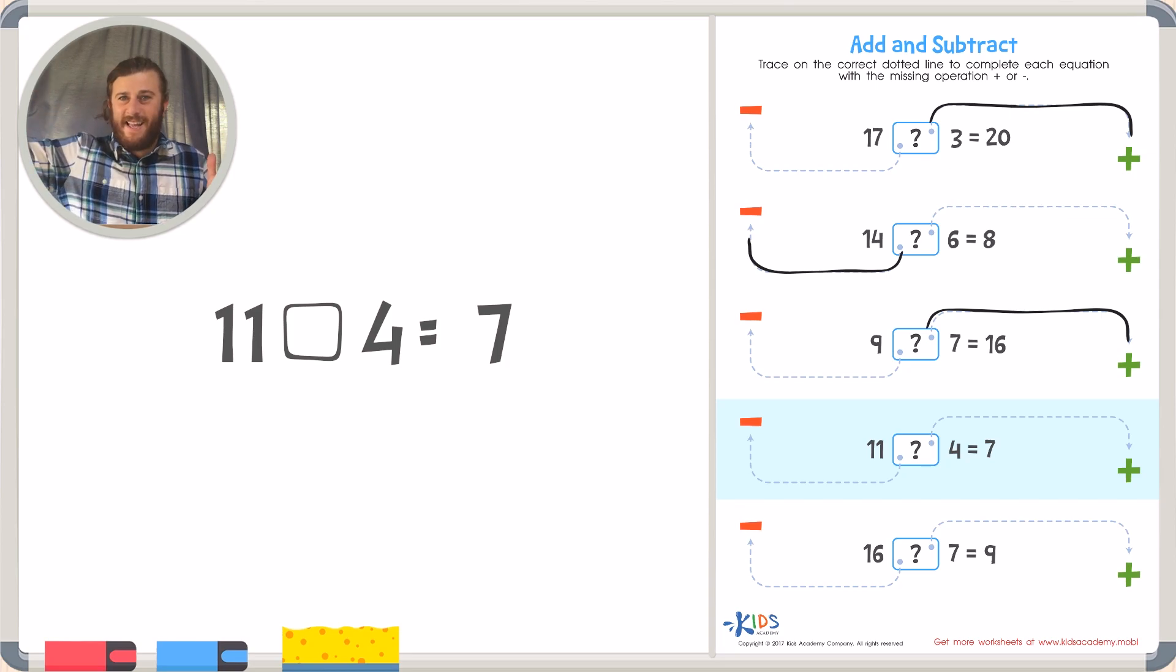So if I'm turning 11 into a 7, am I adding to it or am I taking away? Well I'm going to have to take away 4 to get to 7. So let's trace our line to subtraction.